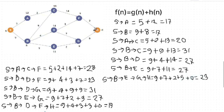So we have to check this out — the cost is 23. We check S to B, B to D, D to F. That gives us the optimal path cost.